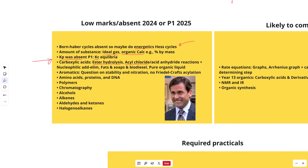Then there's the pure organic liquid side of required practical 10. Brush up on required practical 10, but last year leaned heavily — and I mean heavily — on aspirin and pure organic solid and testing for purity. I think they're not going to leave carboxylic acids practical out. It's going to be either in Paper 2 or Paper 3, and I think they're going to lean into the liquid side of things this year.